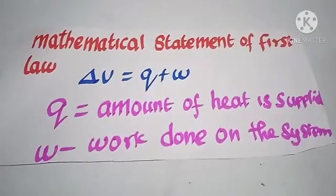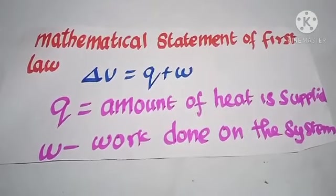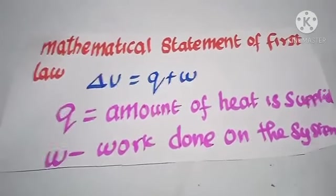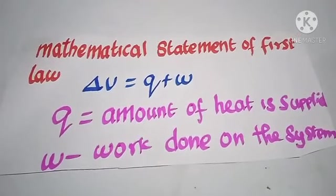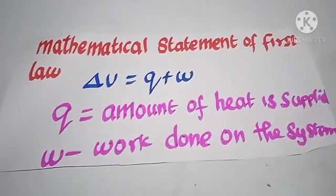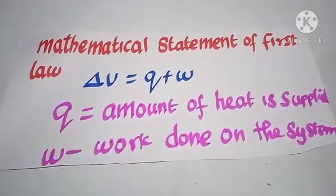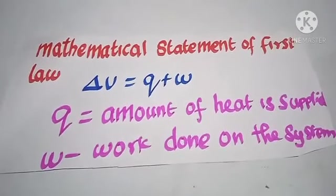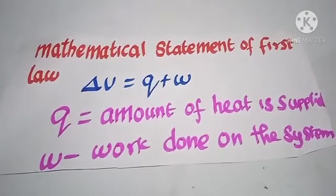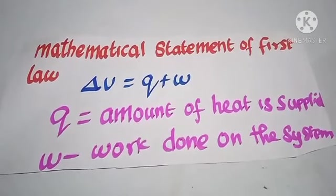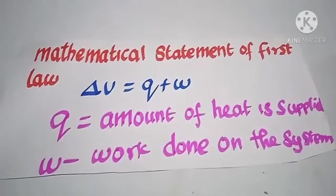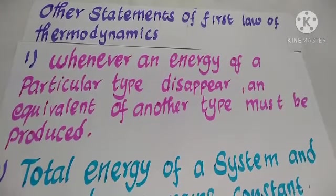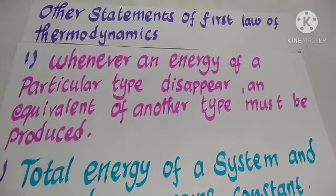The mathematical statement of the first law of thermodynamics is: delta U equals Q plus W. Here, U is internal energy, delta U is the change in internal energy, Q is the amount of heat supplied, and W is the work done on the system.